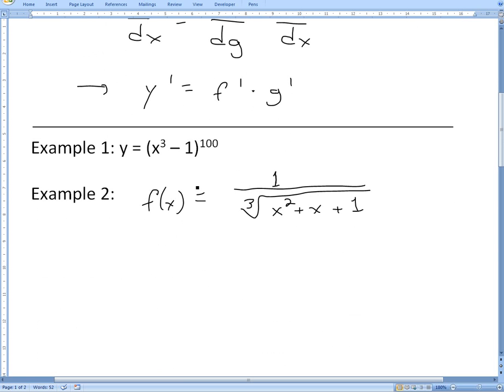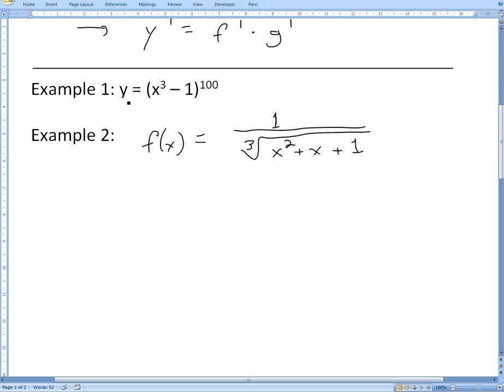So these are the examples I'm going to go over, example one and two. Let's go over example one first and it states y equals x to the power of three minus one all to the power of a hundred right here.